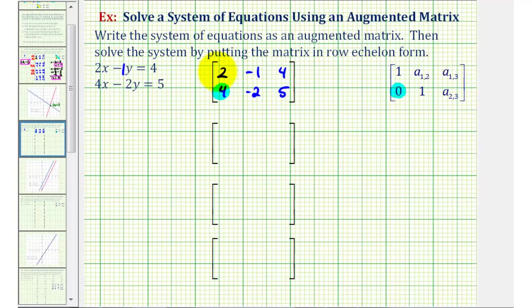So because this is positive four, we want this to be negative four, so our first step is to replace row one with negative two times row one. That would give us negative four, positive two, and negative eight. The second row stays the same for right now.